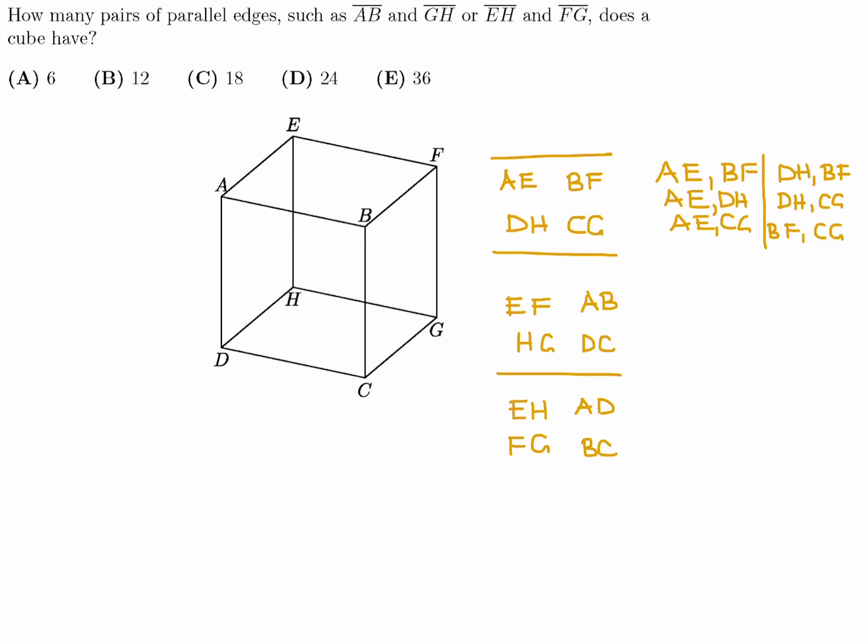So as you can see, I made six pairs here. And in a very similar way, you can make six here and six here. So in total, they'd be 6, 6, plus 6, 18. So the answer to this question is C.